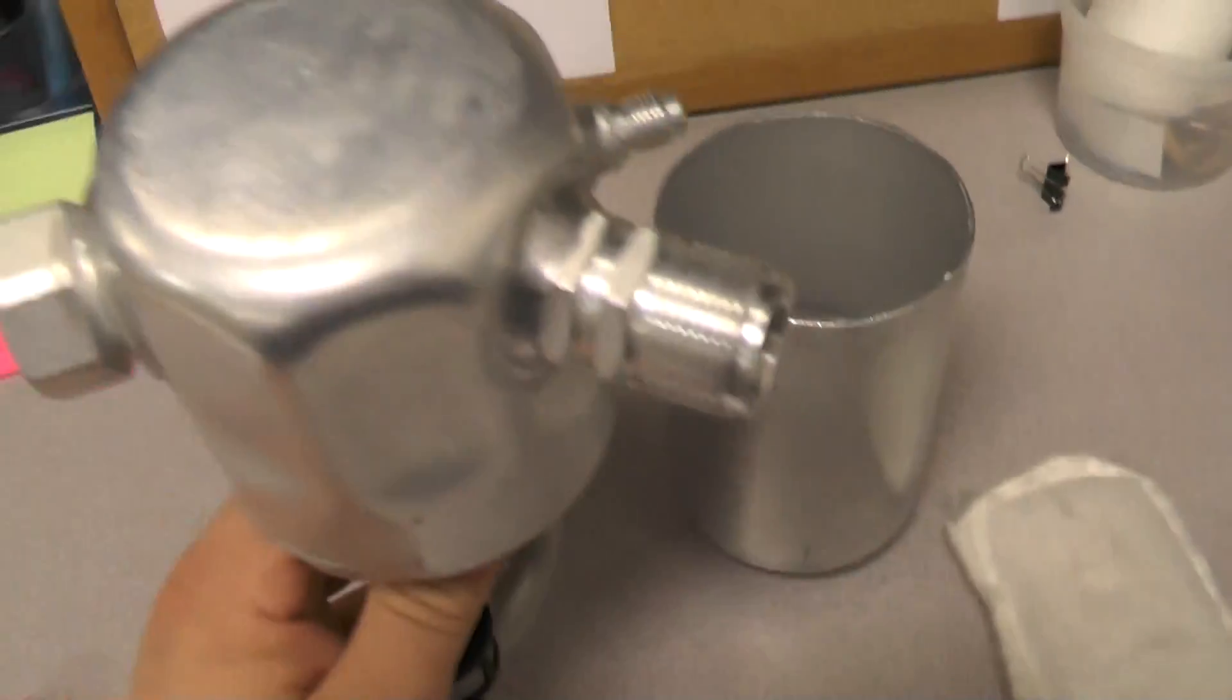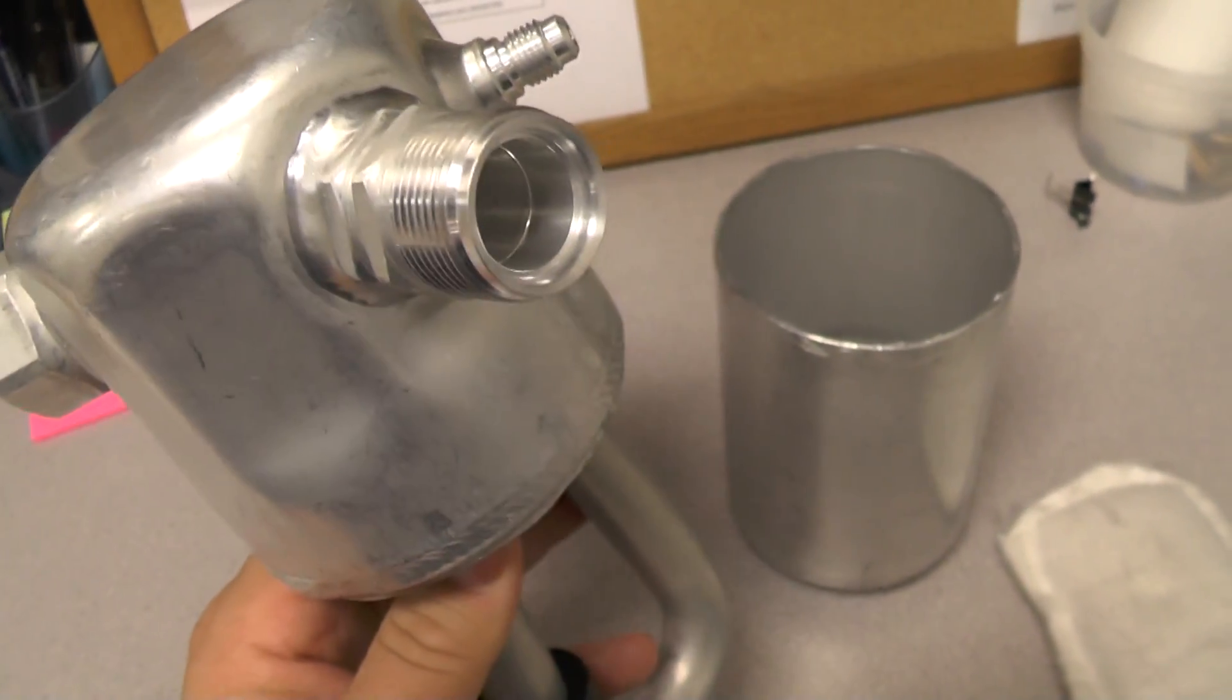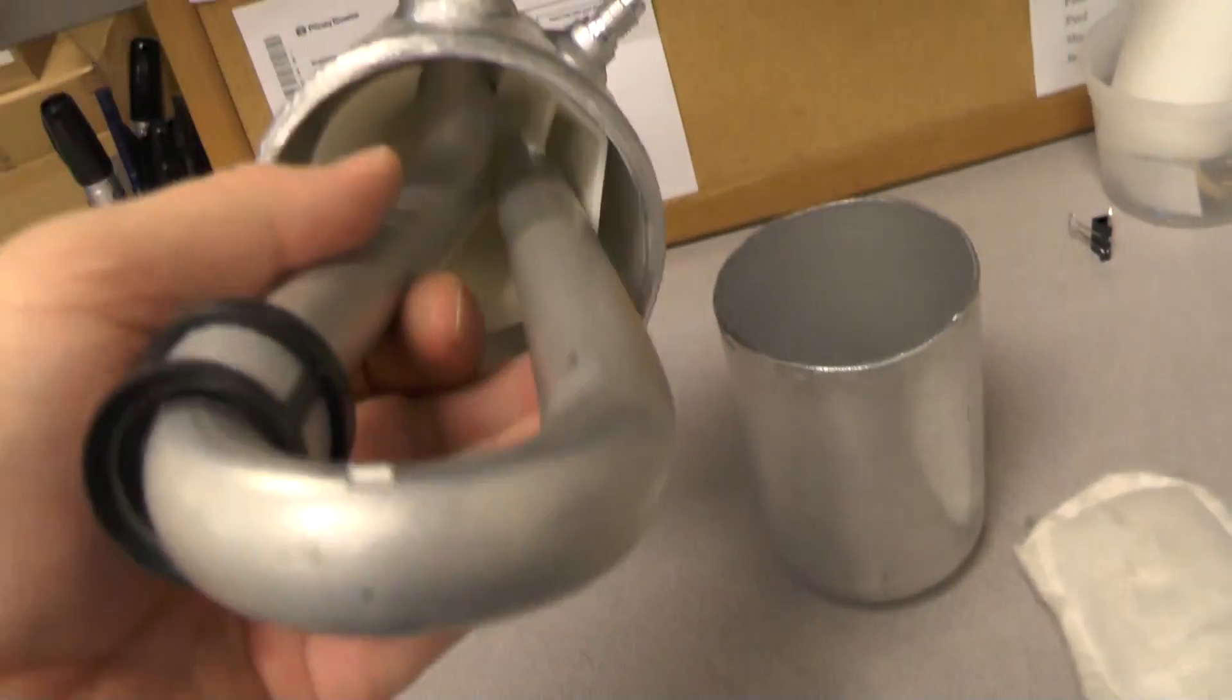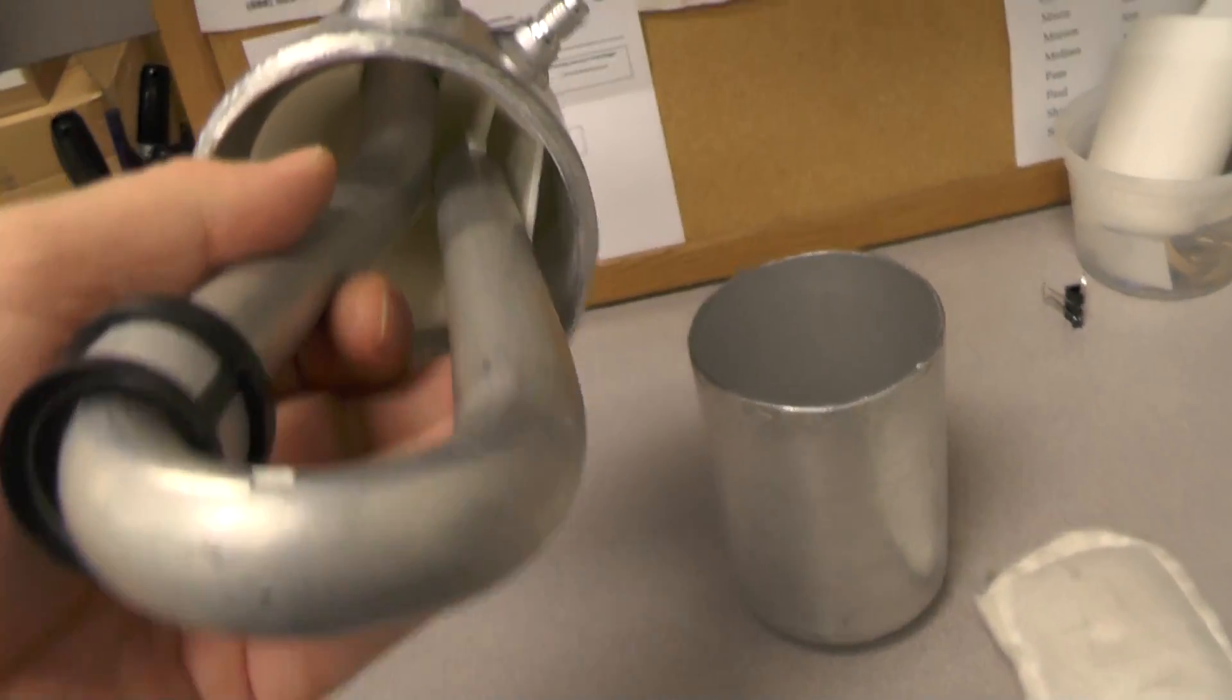So the way it works is the compressor is pulling refrigerant here on this output port. And you can see that the tube comes all the way down to the bottom to where this little hole is, and then goes all the way up into the top of that baffle plate.